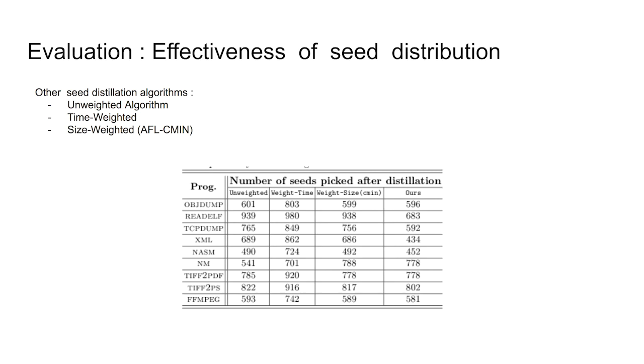We conducted another experiment to compare our algorithm with existing seed distillation algorithms. We run these algorithms on 1000 random seeds from each of our benchmark programs and count the number of picked seeds. As shown in the table, our algorithm reduces more seeds than other existing algorithms in every benchmark program, demonstrating better effectiveness.